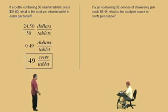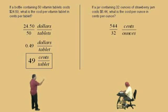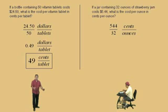Got one more here. Now, if a jar containing 32 ounces of strawberry jam costs $5.44, what is the cost per ounce and again, cents per ounce? So our final answer has to be cents over ounce, not dollars over ounce. Okay, so here, it's $5.44 over 32 ounces but notice here, I'm writing 544 cents over 32 ounces because if I put 5.44, then it would be dollars over ounce but we want cents per ounce and we should know $5.44 is 544 cents, right?